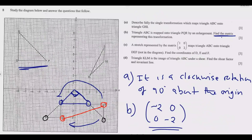Question C: a stretch represented by the matrix [1  0 / 0  2] maps triangle ABC onto triangle DEF (not shown on the diagram). Find the coordinates of D, E, and F. This is worth three marks. We need to multiply the matrix by each vertex coordinate of triangle ABC to find the image coordinates.